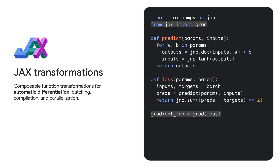The first function transformation we'll look at is the grad transformation. It takes any function as input and transforms it into one that computes the gradients of your function. It does this using automatic differentiation, sometimes called autodiff, a crucial tool for machine learning and optimization tasks. JAX makes it easy — simply wrap the function in grad and right away you'll have a new function for computing the gradient. In our example, we've wrapped the loss function with grad, enabling us to compute the gradients and figure out how to adjust the weights of our model to lower the error.